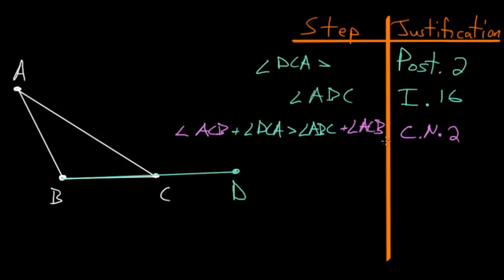Notice that this left-hand side here, ACB and DCA, these two angles essentially form the angles of a straight line. We know because of Book 1, Proposition number 13, that if we have a straight line and some line coming off of it, in this case AC, that the angles formed between those lines must add up to two right angles.